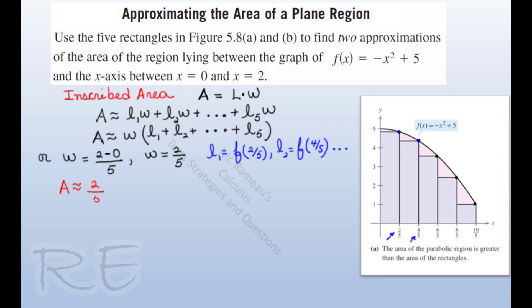So the area will be two-fifths, which represents the equal width, times L₁, which is f of two-fifths. F of two-fifths is equal to negative 4/25 plus 5.